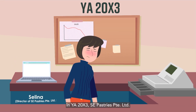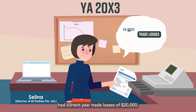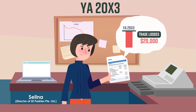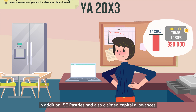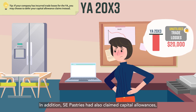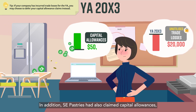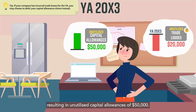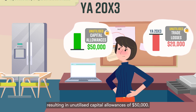In YA20X3, SE Pastries Private Limited had current-year trade losses of $20,000, resulting in unutilised trade losses of $20,000. In addition, SE Pastries had also claimed capital allowances, resulting in unutilised capital allowances of $50,000.